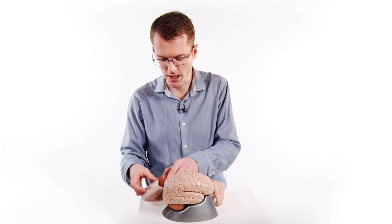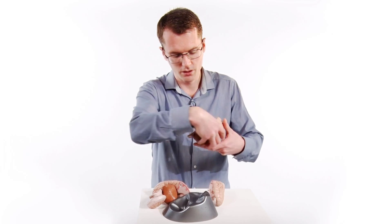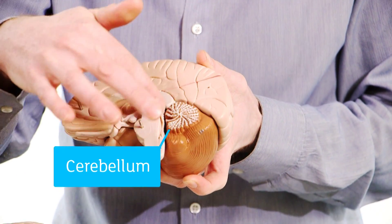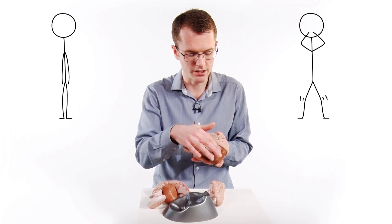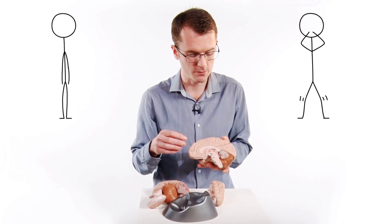There's another bit of the brain right at the back, here, called the cerebellum. And that helps us stand up straight. If the cerebellum doesn't work properly, we get a bit wobbly and fall over.